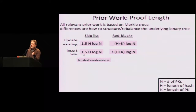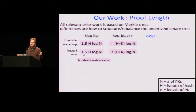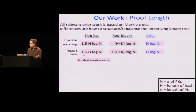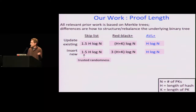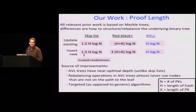We tried very hard to find the correct binary search trees that work well for this problem, and we settled on AVL+ trees. AVL trees were the first balanced binary trees, by Adelson, Welsky, and Landis from the 1960s, covered in data structures 101. For both update and insertion operations, they give us exactly H log N — they are optimal, as good as you can do. They don't require trusted randomness. They don't have the factor of two or factor of three overhead.